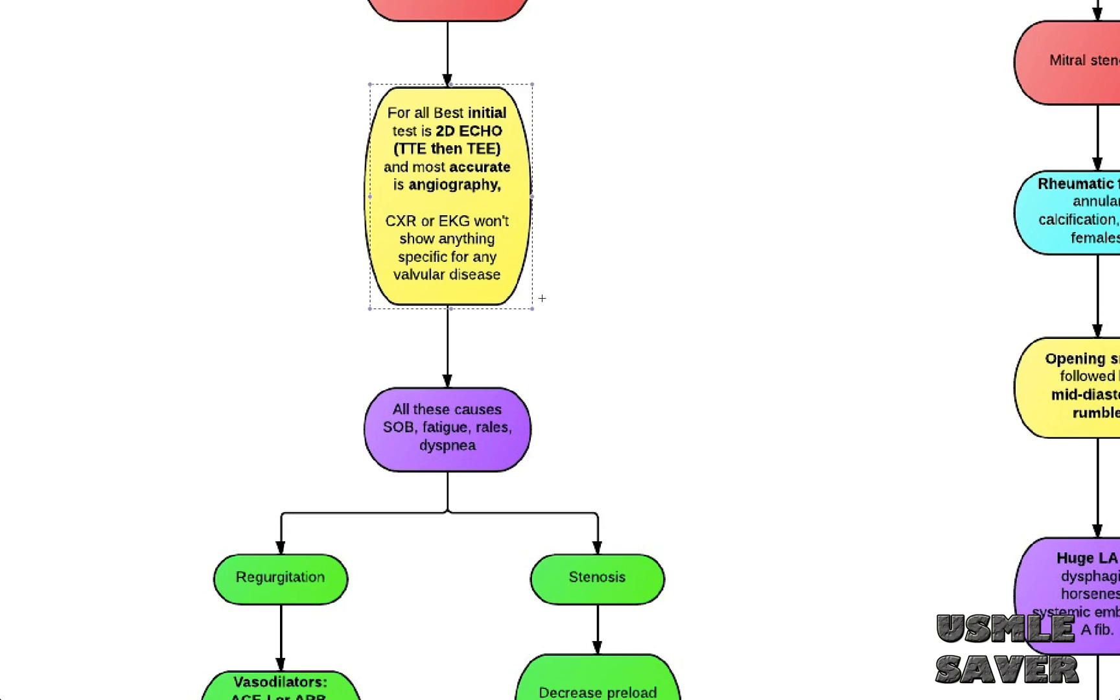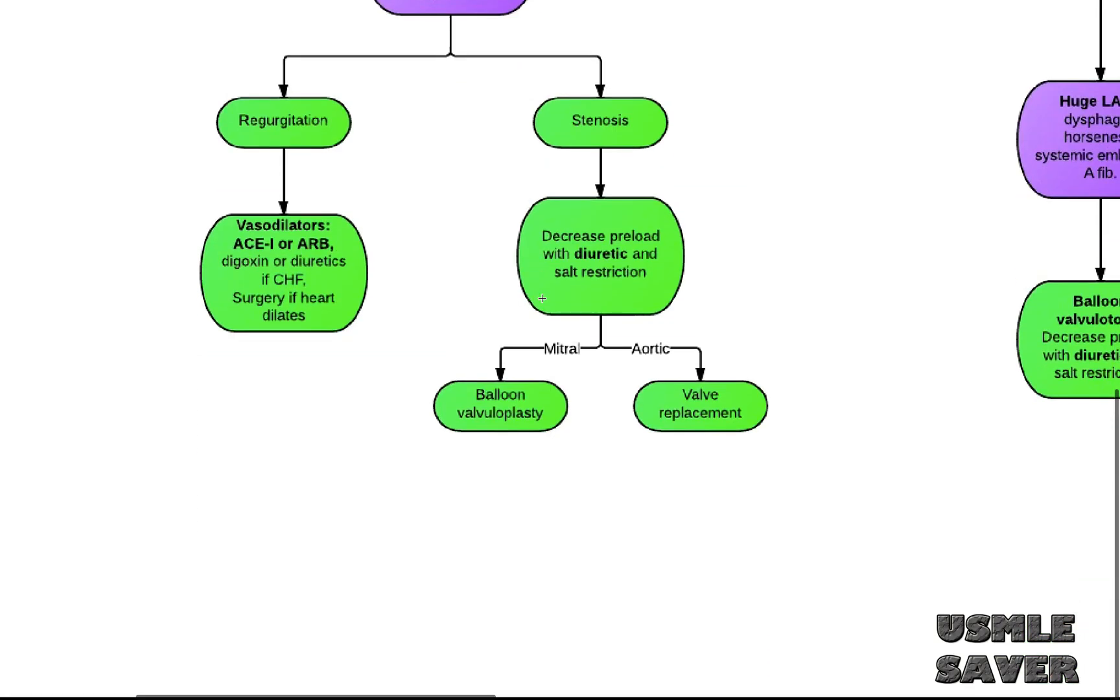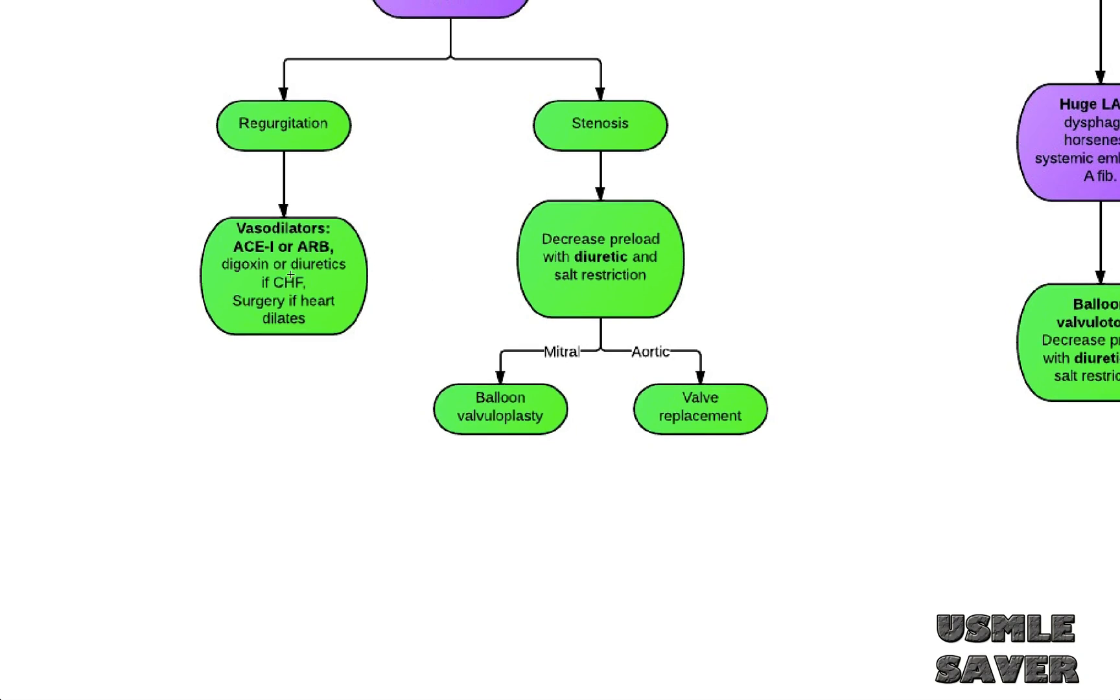Now let's look at the management. Management is also very similar. For mitral or aortic regurgitation, management is same. You would manage both types of patients with vasodilators like ACE inhibitors or angiotensin receptor blockers. If any of these patients have heart failure symptoms then you can add digoxin or diuretics. Before heart starts to dilate you want to do surgery for these patients because once the heart dilates the change is irreversible.